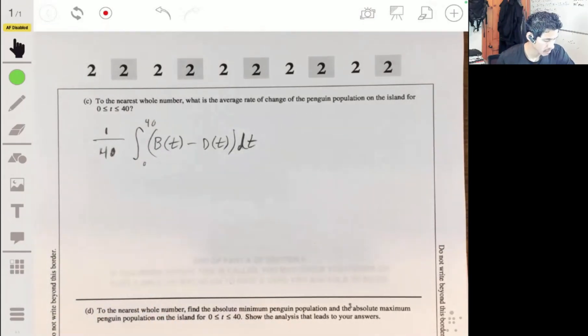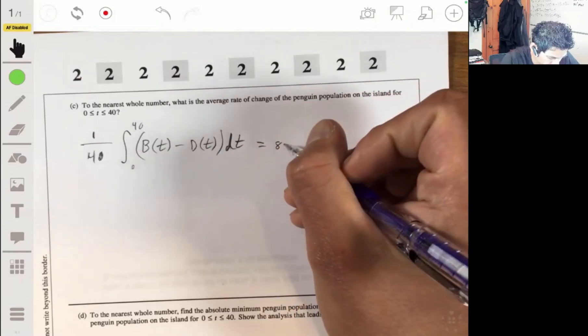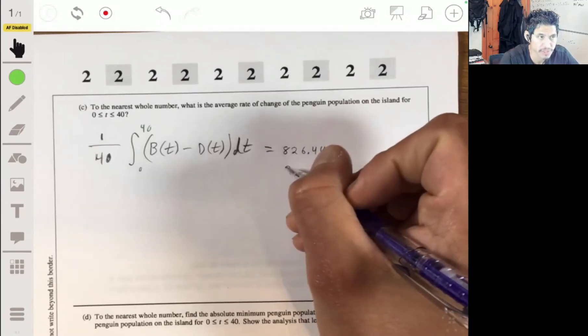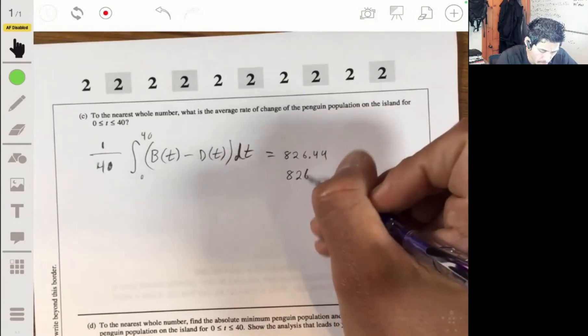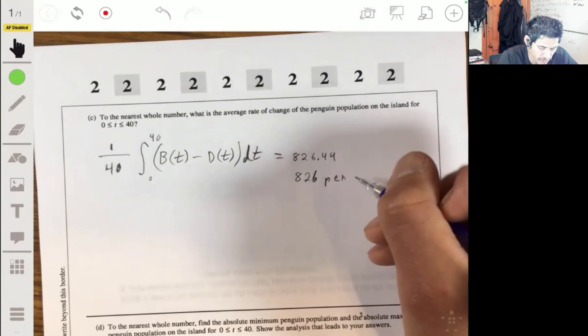Let me bust out my calculator, let's see what we get. So then you get 826.44, or you could say 826 penguins per year. It's increasing by a little more than 826 penguins per year.